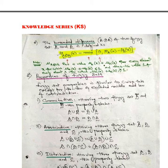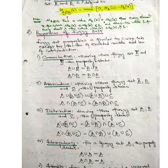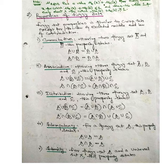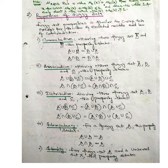The properties of a Fuzzy Set are similar to the crisp set except for the law of excluded middle and the law of contradiction — these two will not hold in the Fuzzy Set. The commutative property states that Fuzzy Set A union B equals B union A, and A intersection B equals B intersection A.